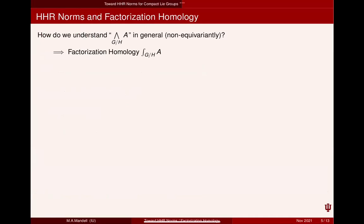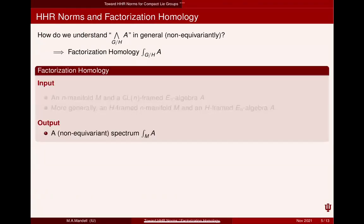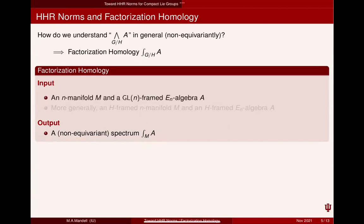You might ask how we're supposed to make sense of this smash product in general — a smash product over some kind of space — at least non-equivariantly. We know the answer: this kind of smash product is exactly what factorization homology is supposed to give us. You plug in something called A and a manifold M and you get out a spectrum. The kind of algebra we need is something called a GL_n-framed E_n algebra.